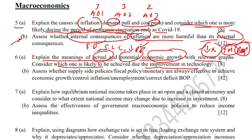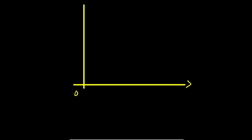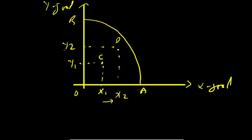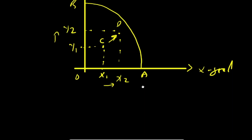For actual growth, I'm making a PPC diagram as it is simple to understand and make. Initially the PPC is OAB. Any point inside the PPC, like point C, shows unemployed resources where output of good X is X1 and output of good Y is Y1. Moving from point C to point D increases output of both goods, representing employment of previously unemployed resources, which leads to actual economic growth.